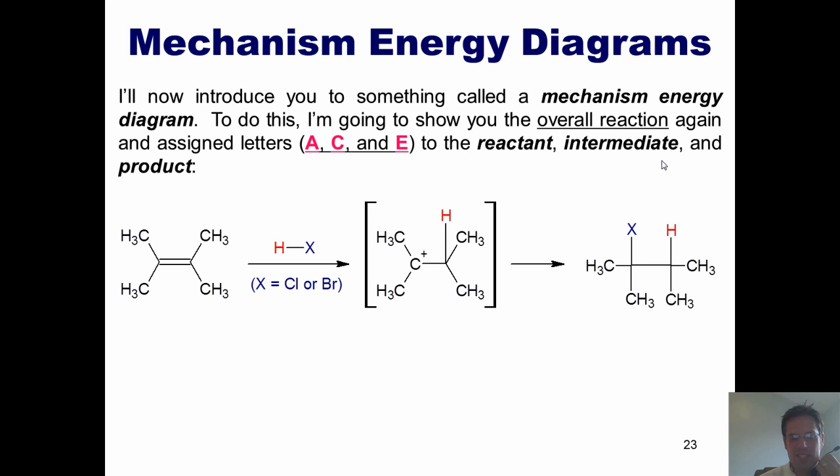You'll notice that we begin with this alkene. We treat it with HX, where X is a chlorine or bromine. We get this intermediate. It's got a carbocation here. And then the chloride or bromide come in here and plug in this hole to form our final product. Compound A is our alkene. Compound C is our intermediate. And compound E is our final product. You might be wondering, why in the world would I skip letters B and D? I'll show you that momentarily.